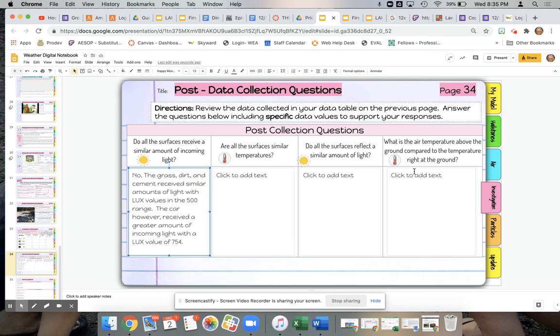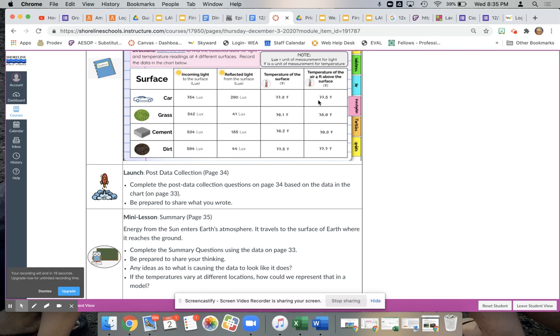And then finally, what is the air temperature above the ground compared to the temperature right at the ground? So then we would come back to our data. What do you think? The temperature right at the ground, so at the surface compared to the temperature of the air above the ground? Which one is larger? Which one is smaller? And give some specific data in your responses.